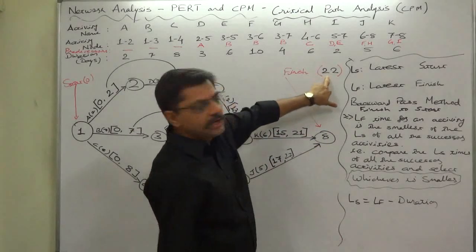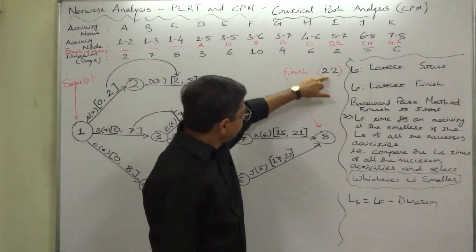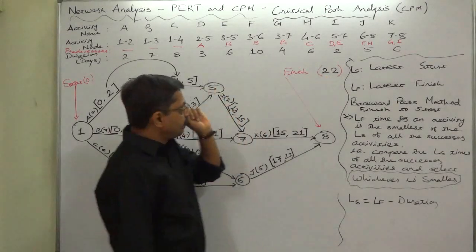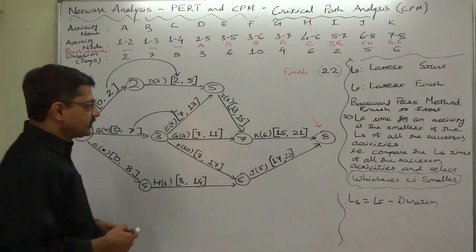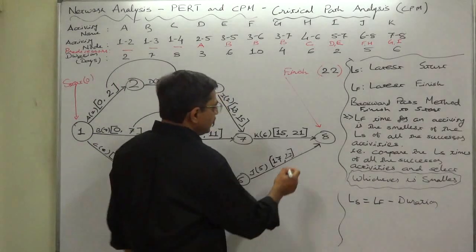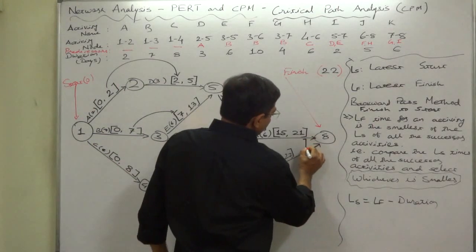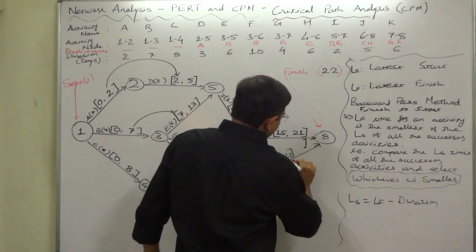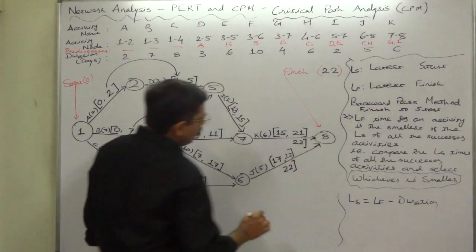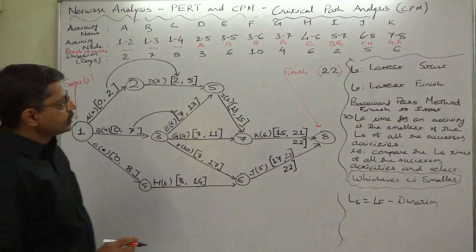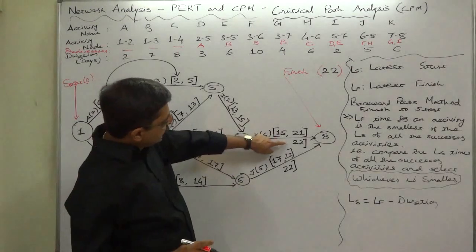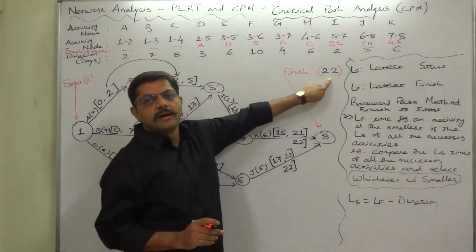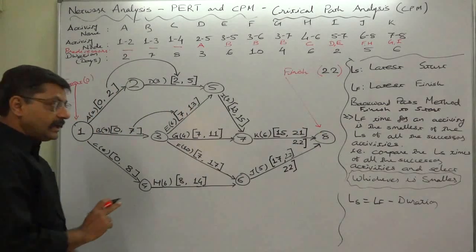On the basis of the previous lecture, we know that the earliest finish time of the project is 22. That itself will be taken as the latest finish time of the project. There are two end activities, and for both the end activities we should take the latest finish time, which is the earliest finish time itself - 22.